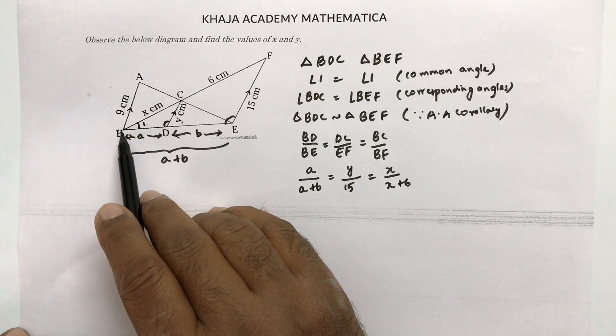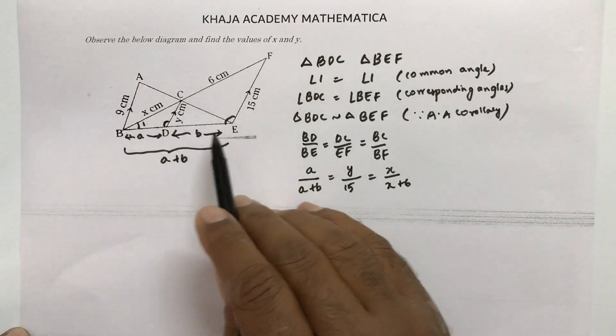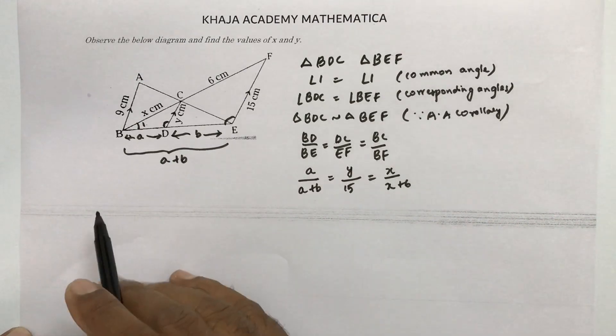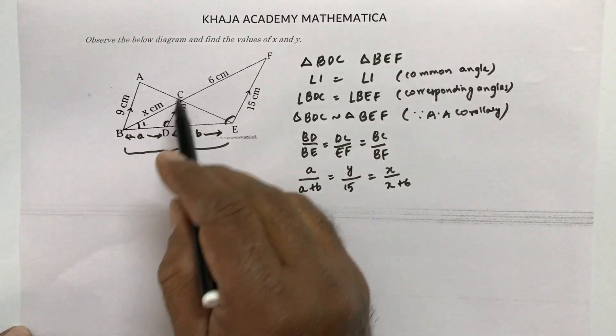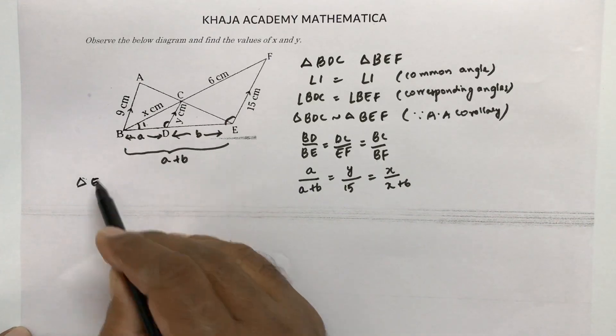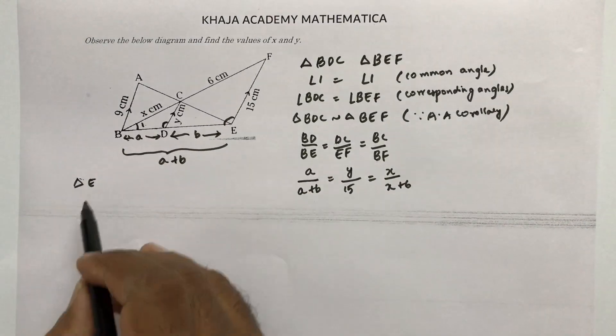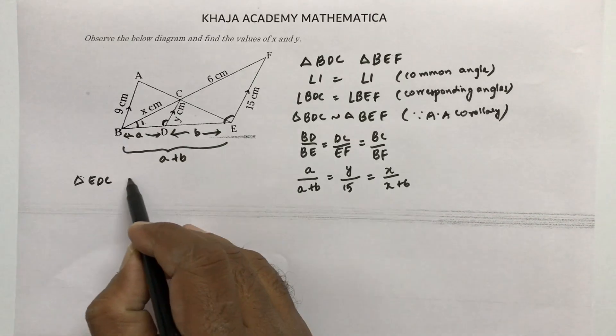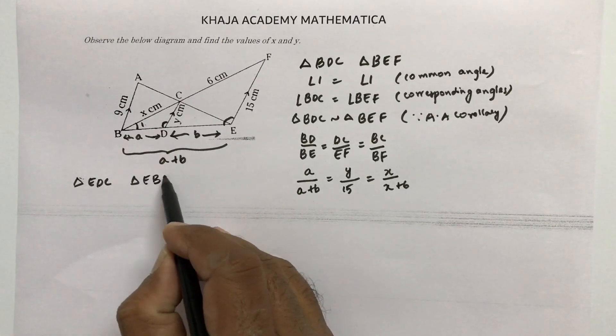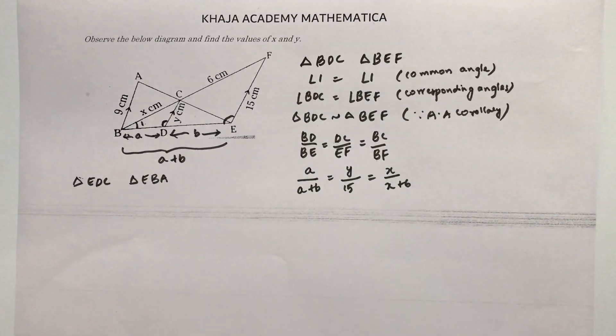Now see I started first from here BDC, BEF. I got this part. Now start the proof from here EDC. Take the triangle EDC and triangle EBA.